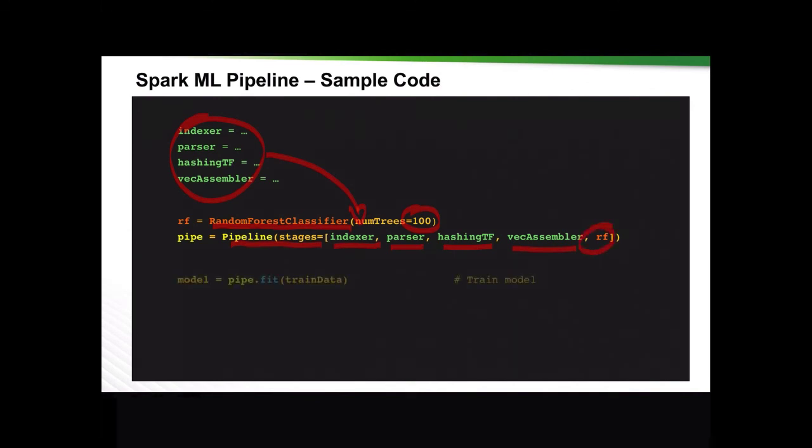Then I will use my pipe to apply the fit method on my training data to get the model. With this model I can then apply the transform method on a test data, which is generally about 30 to 40 percent of the entire data set that wasn't used for training to get the results. With the results I can then evaluate the model accuracy.